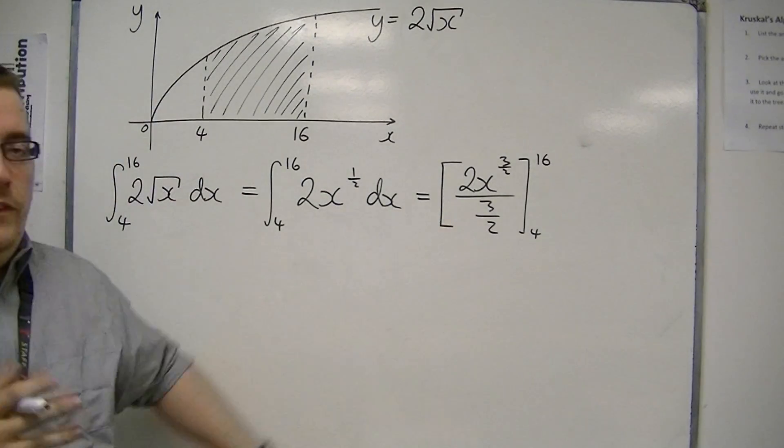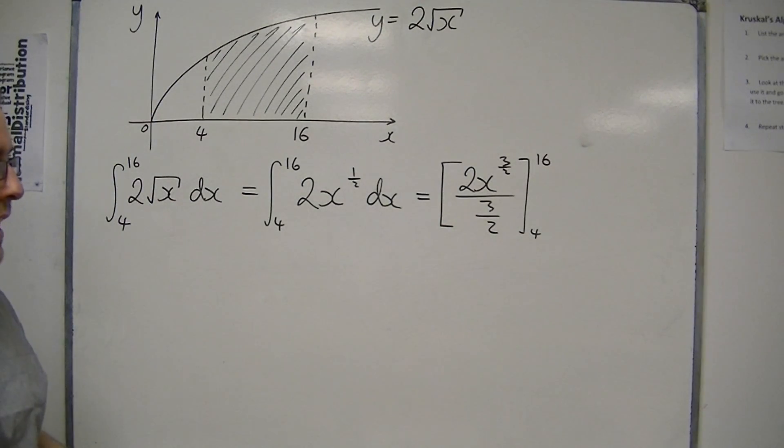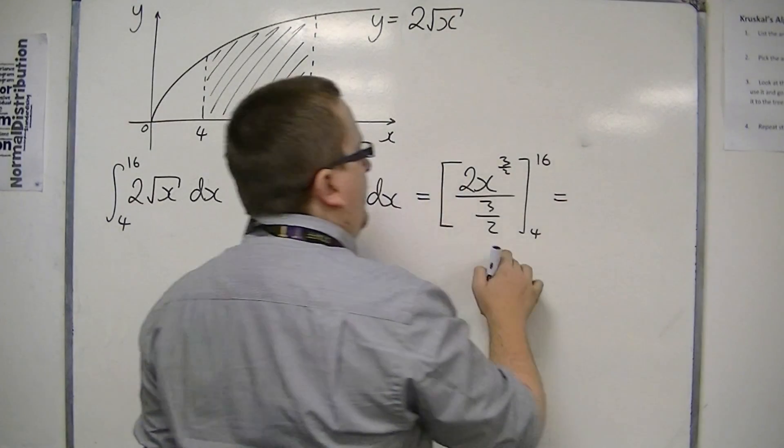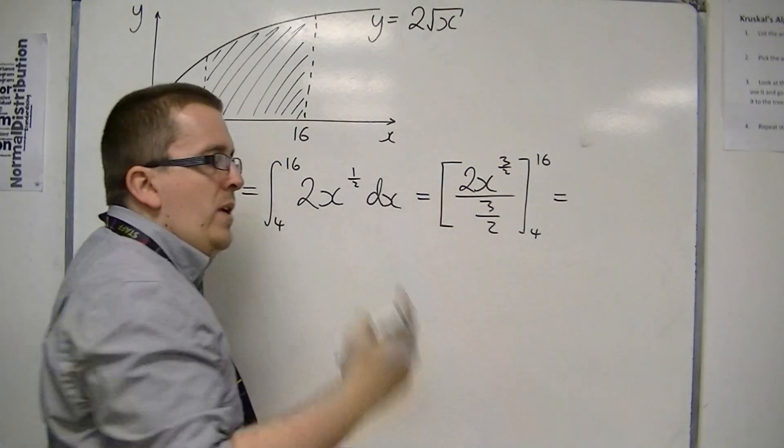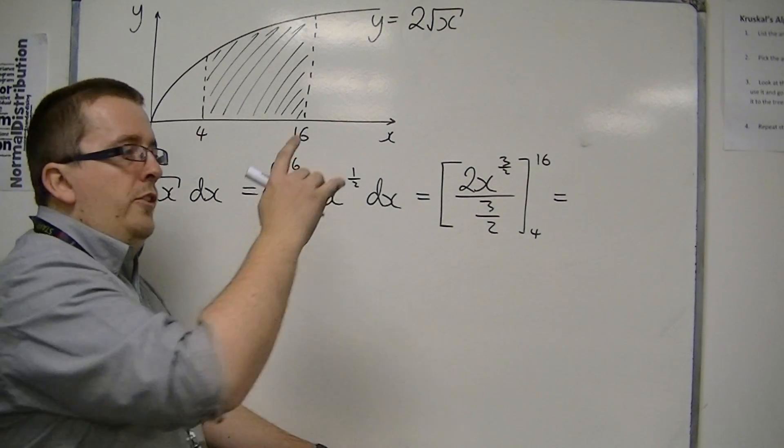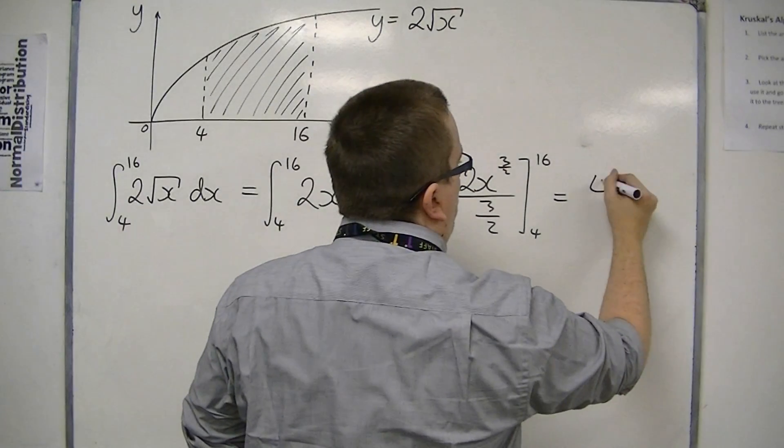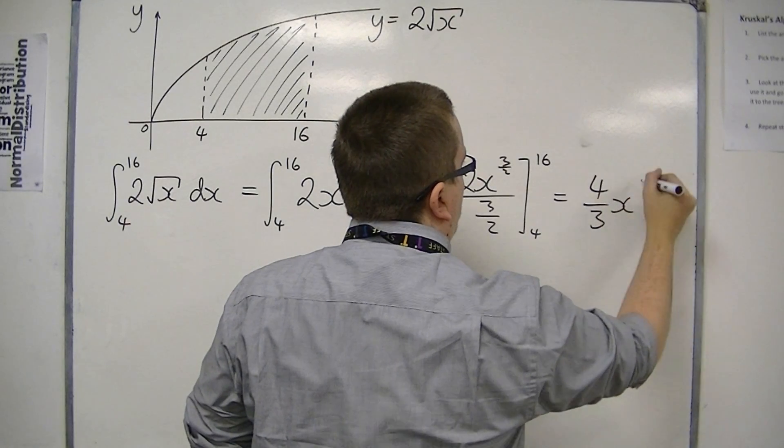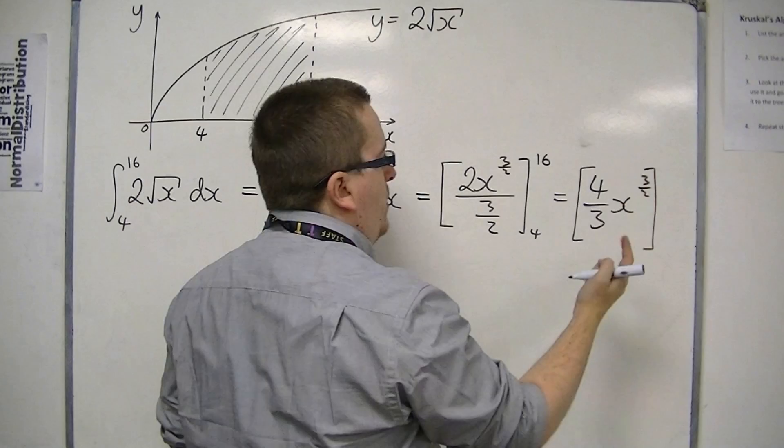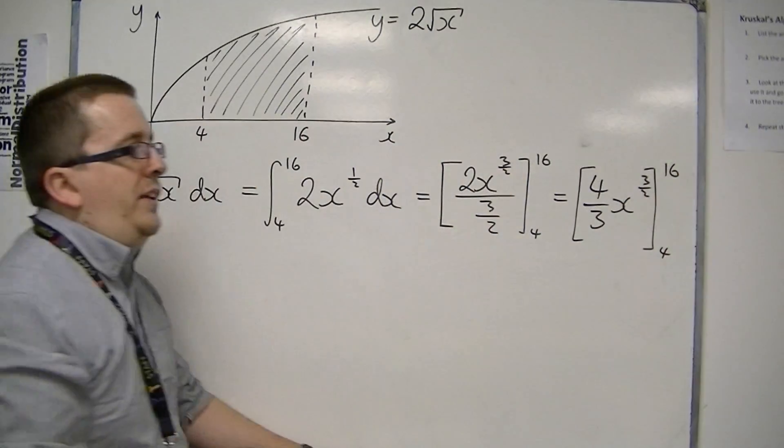Now I want to simplify that. You can leave it as is, but it looks quite messy. If you're dividing by 3 halves, that's the same as multiplying by 2 thirds. 2 lots of 2 thirds is 4 thirds. So I can rewrite this as 4 thirds x to the 3 halves, evaluated between 4 and 16.